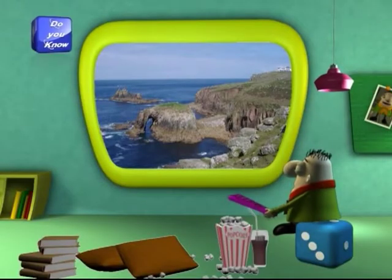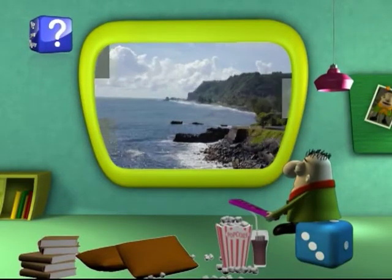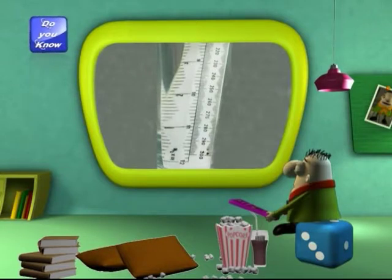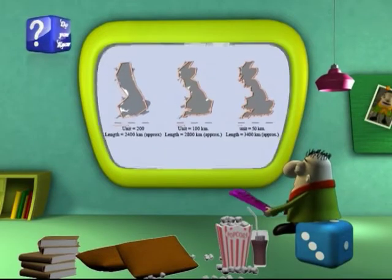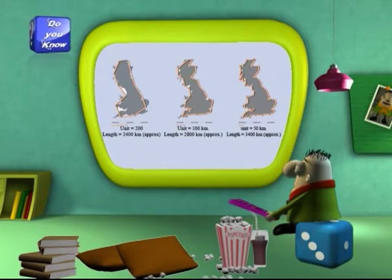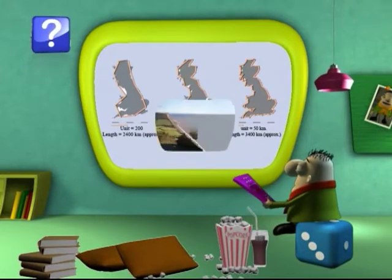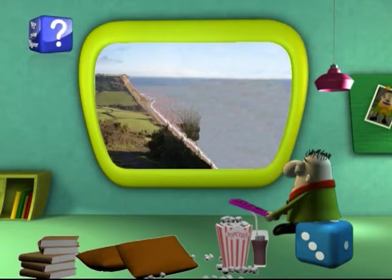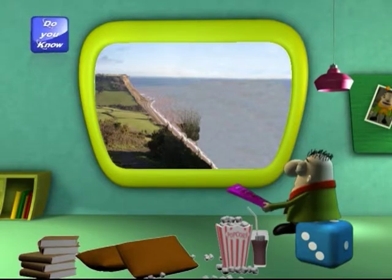To measure the coastline of Britain or any other coastline, a ruler cannot be used, as it cannot give exact measures in its findings. Wondering why? Well, that's simply because if we decrease the size of the ruler, though the measurements might become accurate, but the coastline length to be measured will increase without limit. So what do we do?